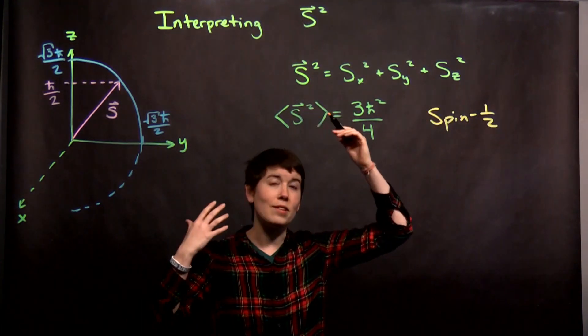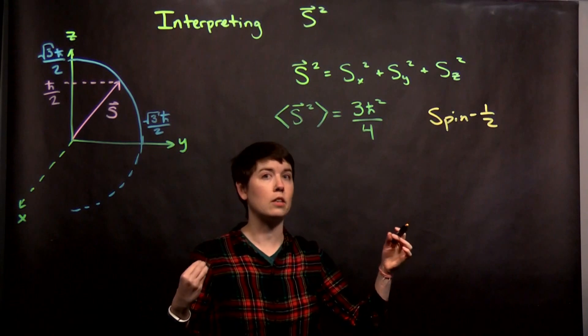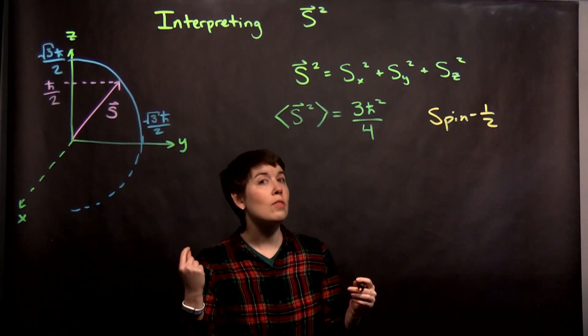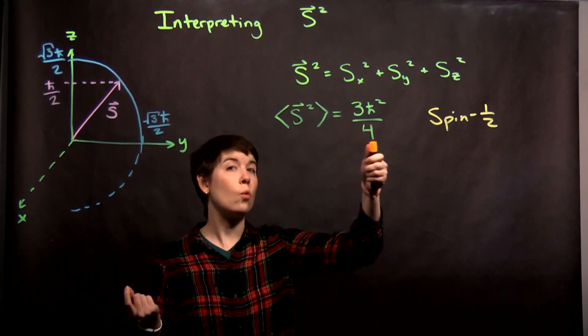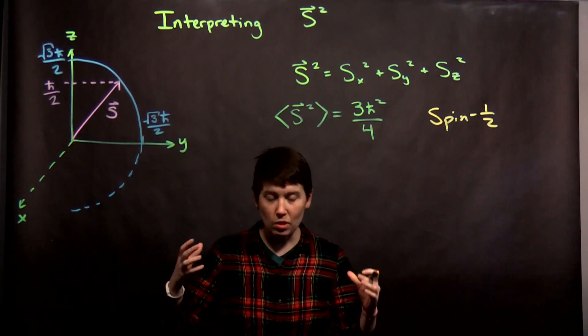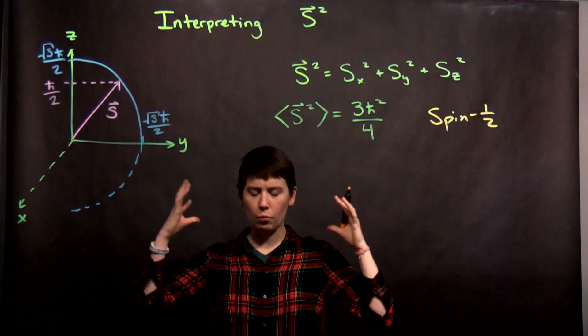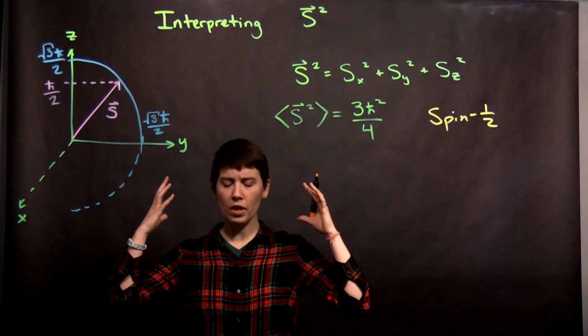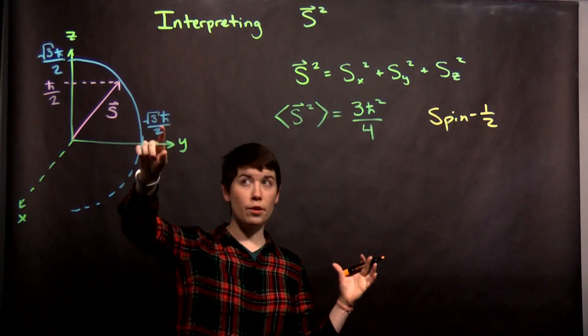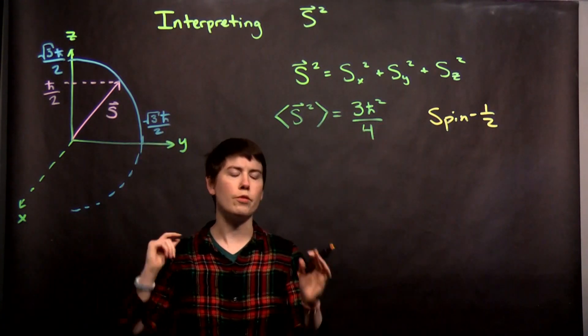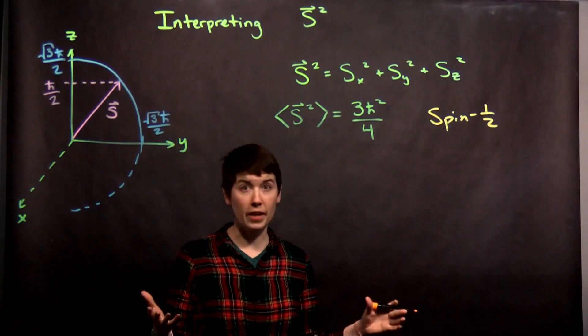And if we want to think about the length of the vector, it would be the square root of this. And so this is in three-dimensional space, and we can say that the spin vector has a length of square root of 3ℏ over 2. So that's the length of our vector.